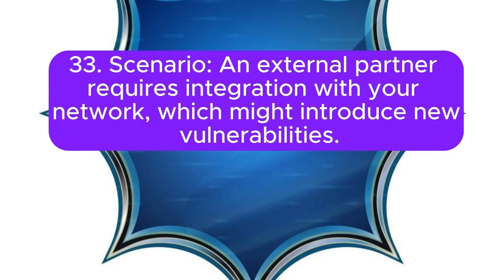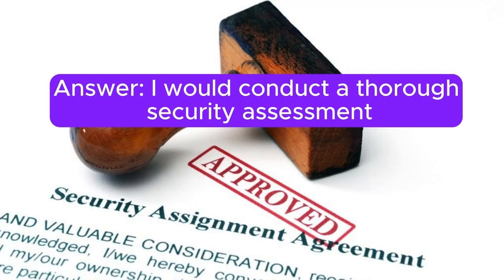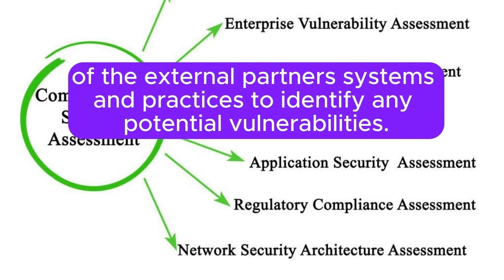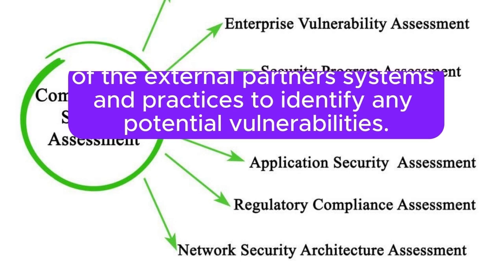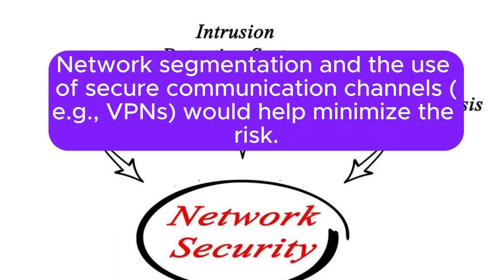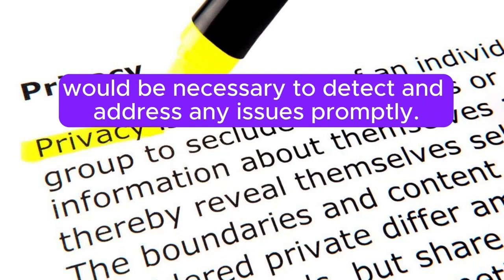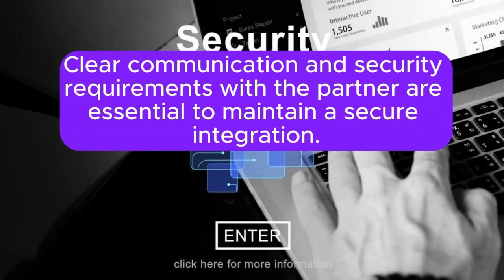Scenario 33: An external partner requires integration with your network, which might introduce new vulnerabilities. How do you mitigate this risk? I would conduct a thorough security assessment of the external partner's systems and practices to identify any potential vulnerabilities. I would implement strict access controls, ensuring that the partner only has access to necessary resources. Network segmentation and the use of secure communication channels such as VPNs would help minimize the risk. Regular vulnerability scans and continuous monitoring of the integrated systems would be necessary to detect and address any issues promptly. Clear communication and security requirements with the partner are essential to maintain a secure integration.